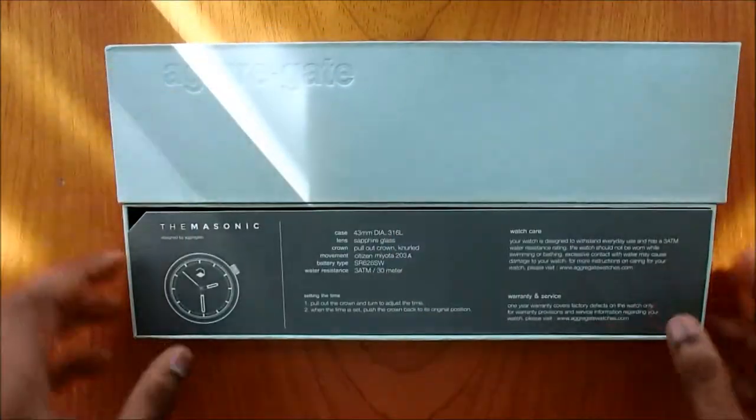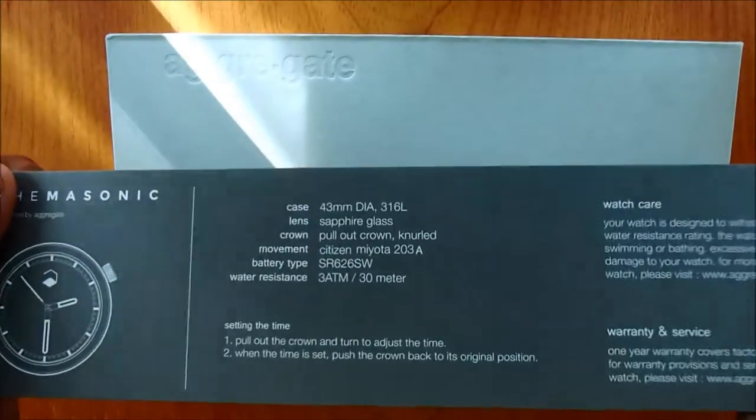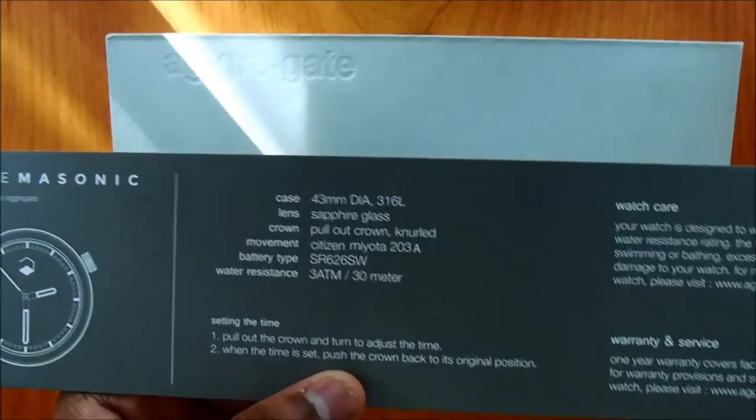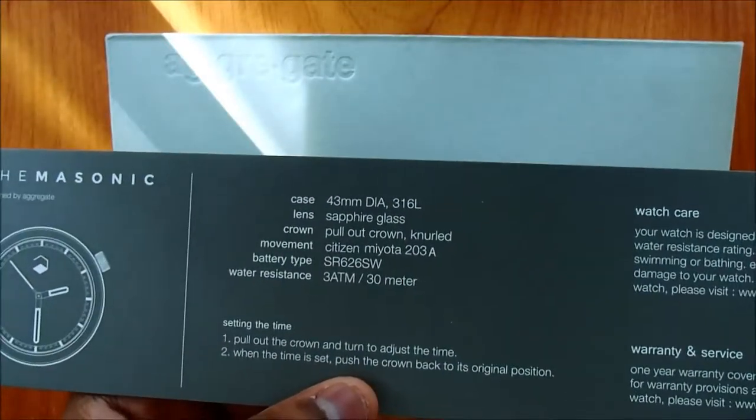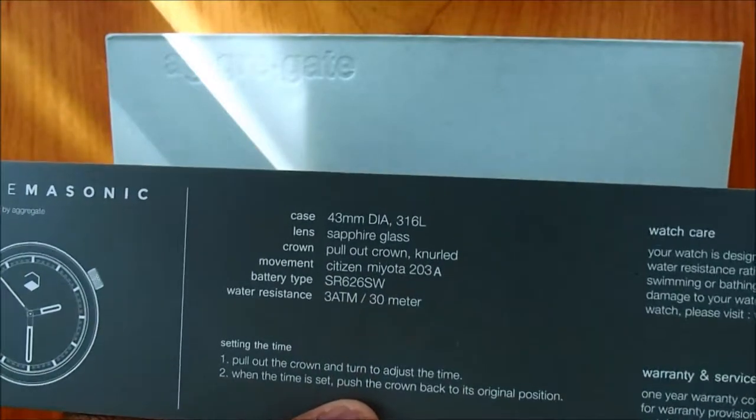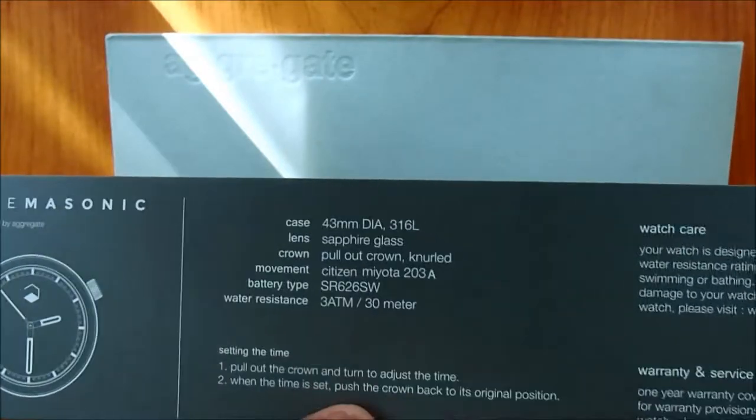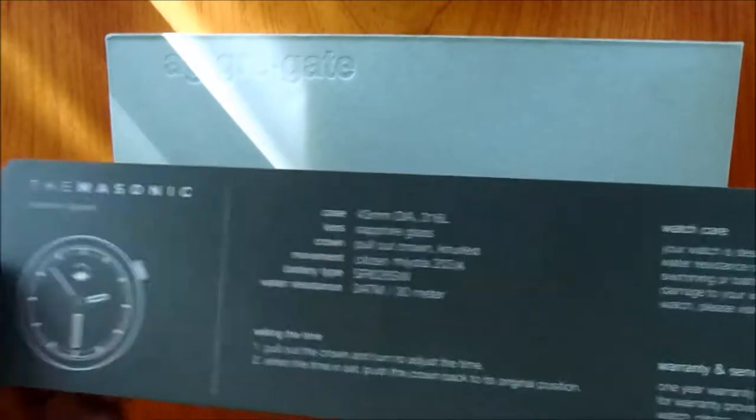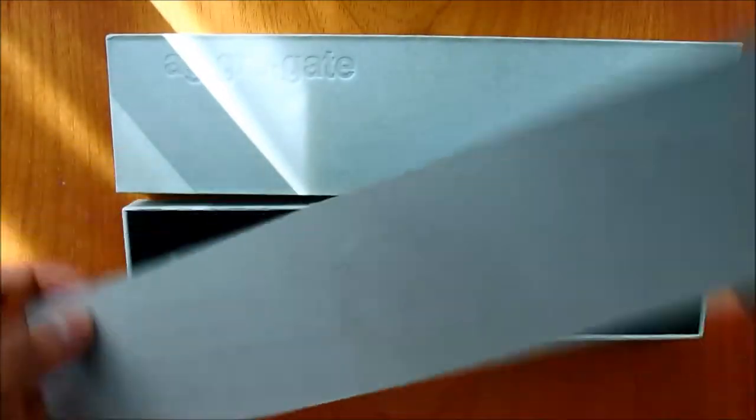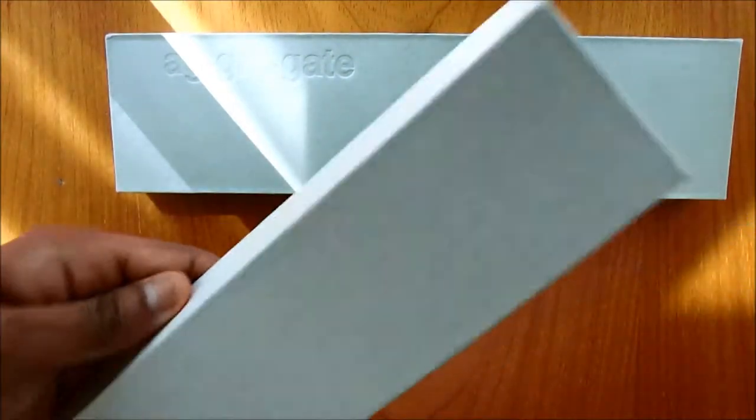And here are your details. So here is the detail of the watch: the case size is 43 millimeter, lens is sapphire crystal glass, your crown is a pull-out crown, your movement inside is a Citizen Miyota 2203A, battery type is there, and it's water resistant up to 3 ATM.